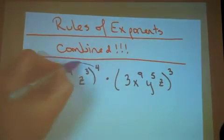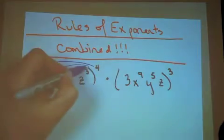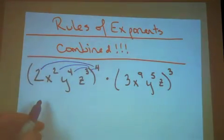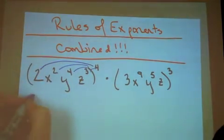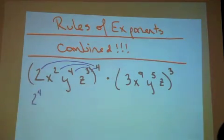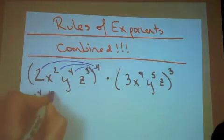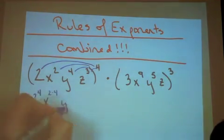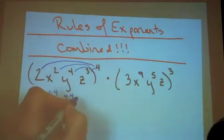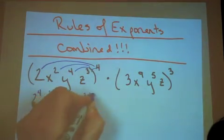Well, the first thing I need to do is, in each of these pieces, distribute, in a sense, their exponents. So I need to do 2 to the 4th, x to the 2 times 4, y to the 4 times 4, and z to the 3 times 4.